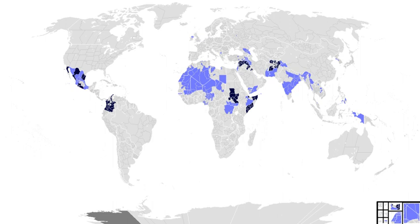Asymmetric warfare describes a military situation in which two belligerents of unequal strength interact and take advantage of their respective strengths and weaknesses. This interaction often involves strategies and tactics outside conventional warfare.